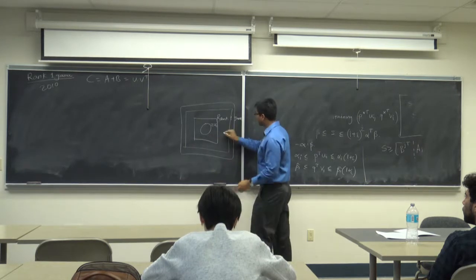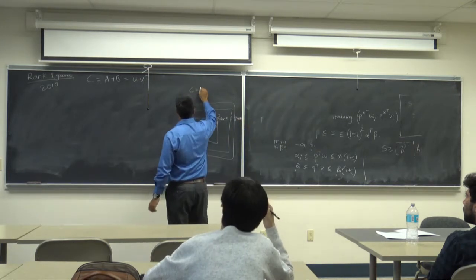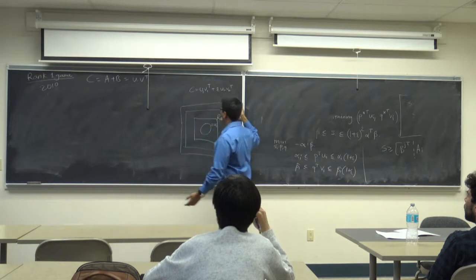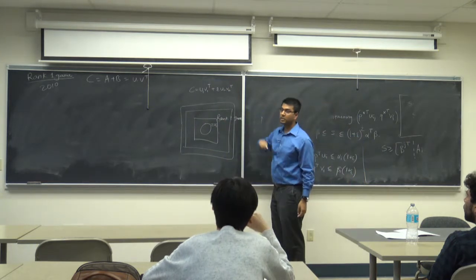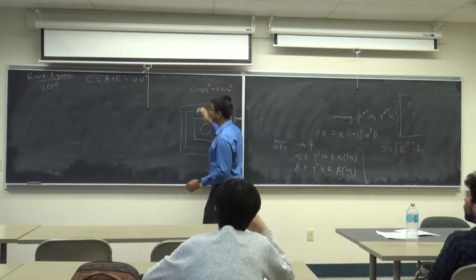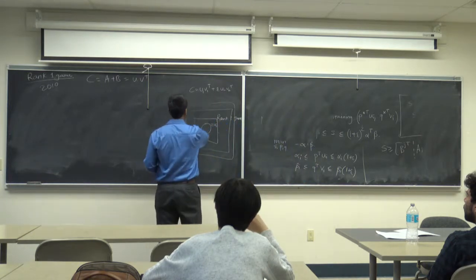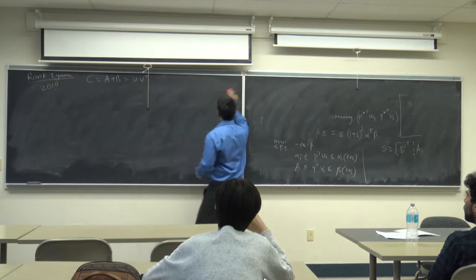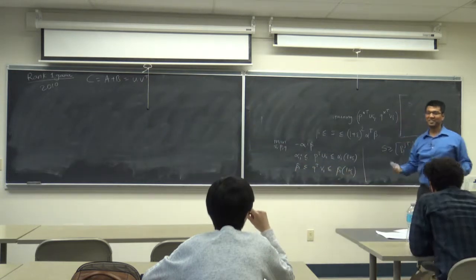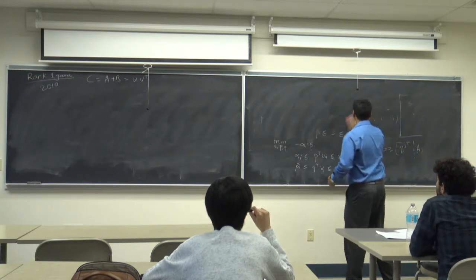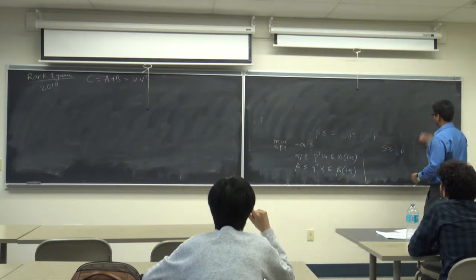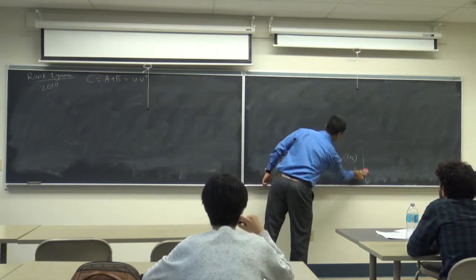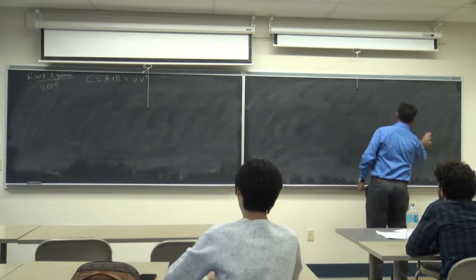An interesting open question is what happens when C equals U1 V1 transpose plus epsilon times U2 V2 transpose — just a slight variation of rank 1. No paper has solved this yet. Perhaps some of you can look at it. Also note that in this algorithm we compute stable Nash equilibrium, which is a refinement of Nash equilibrium — not just any Nash equilibrium.